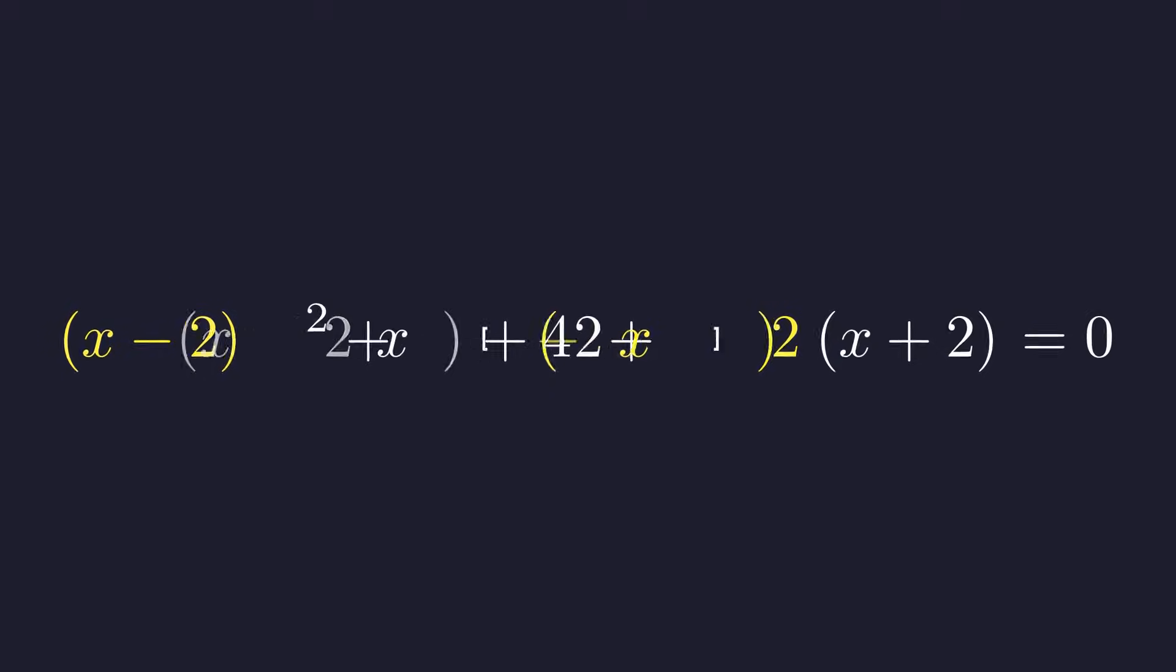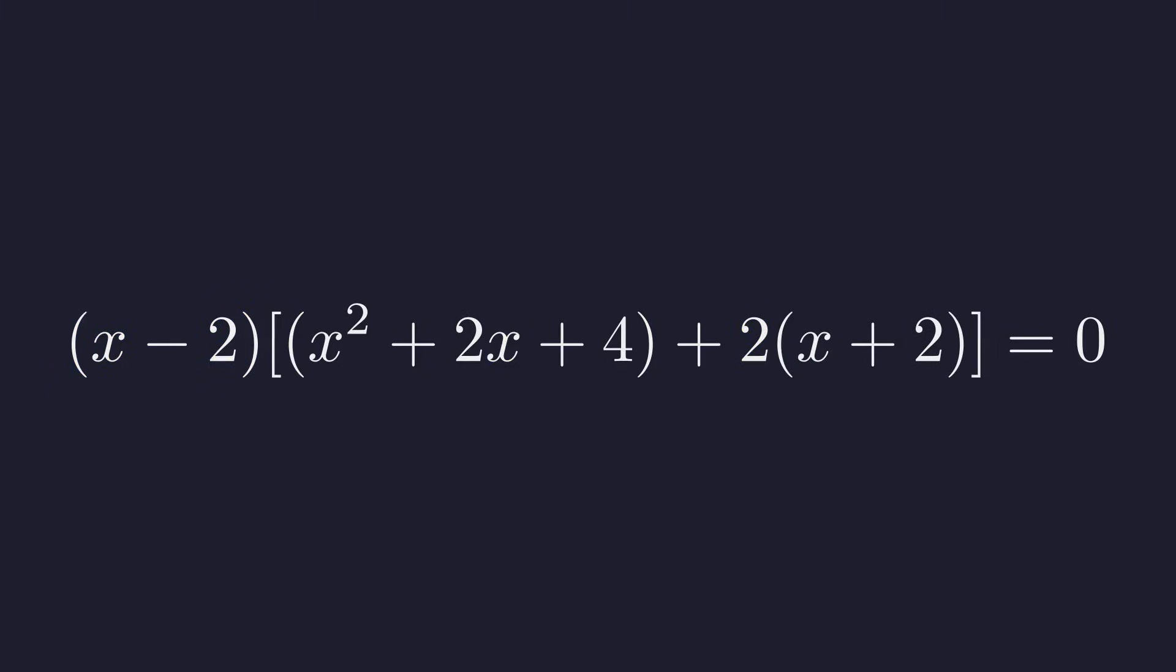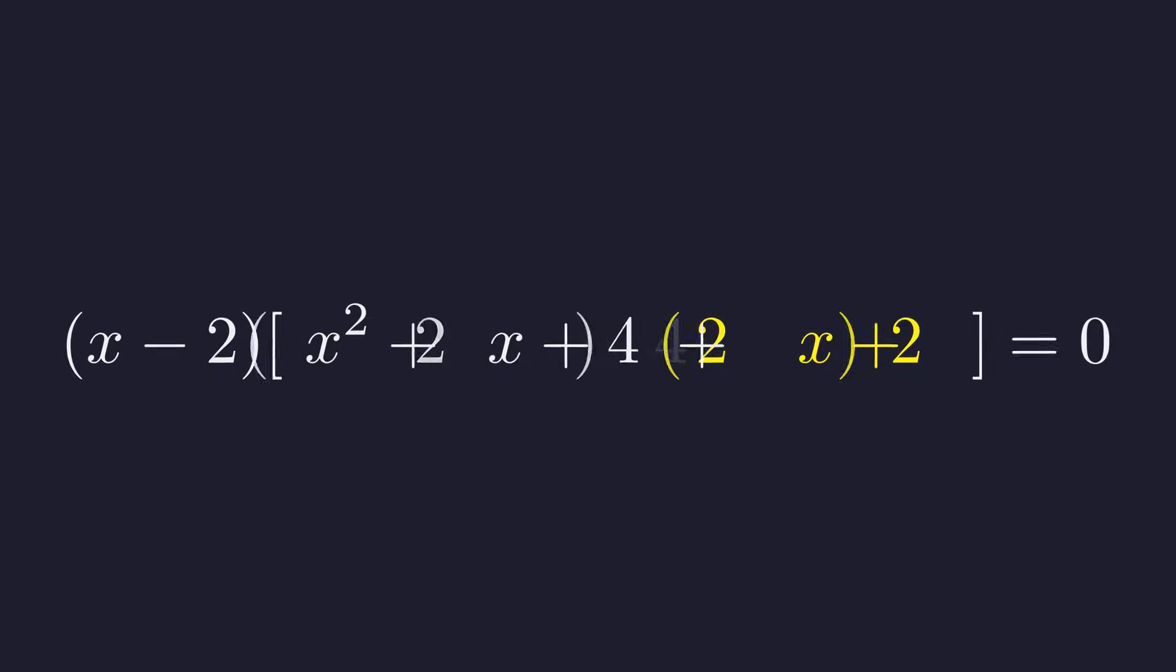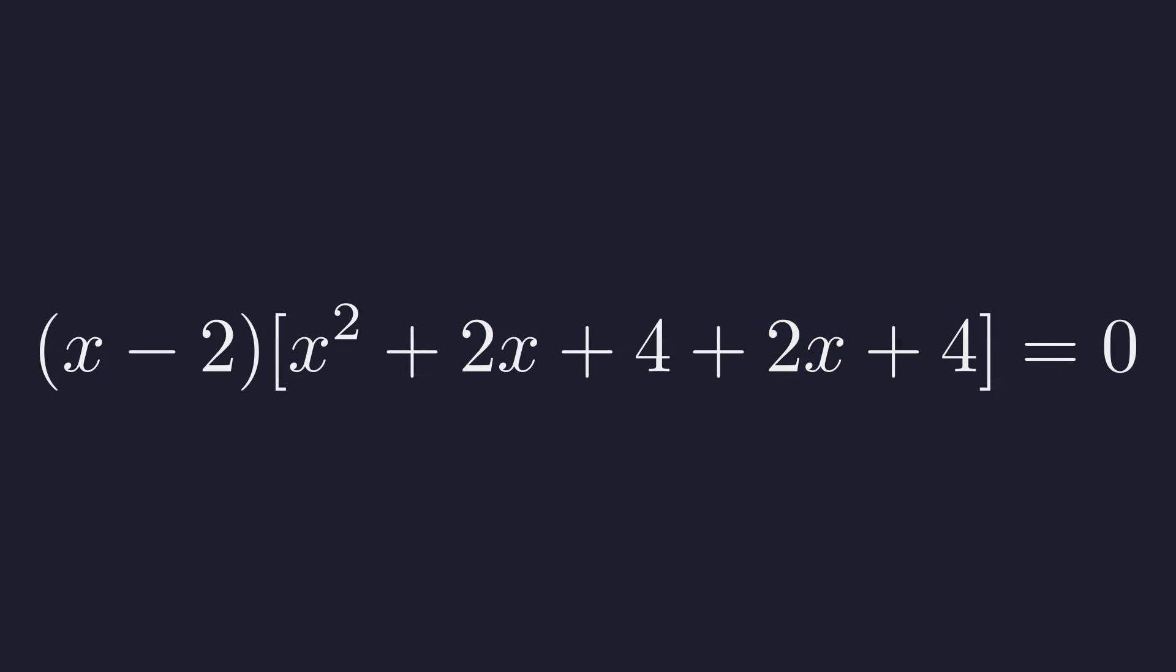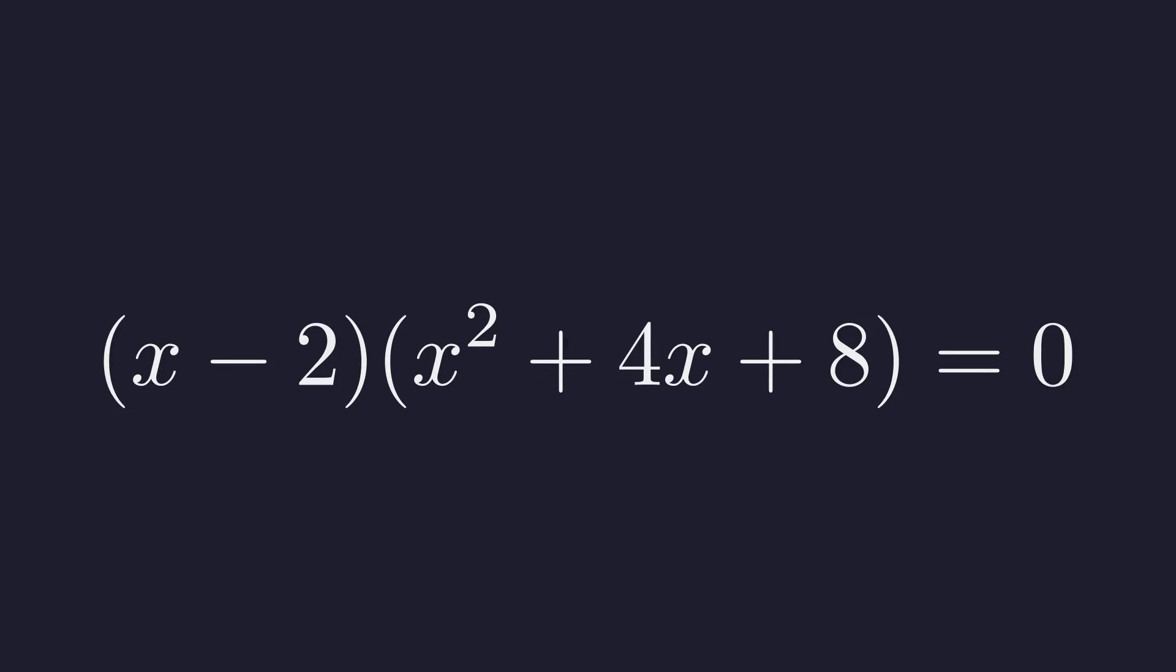Factoring out x minus 2 leaves us with the sum of what's left inside the brackets. Now we need to simplify what's inside the brackets. Let's distribute that 2. This gives us x squared plus 2x plus 4, plus another 2x plus 4. Let's combine those like terms. 2x plus 2x gives us 4x and 4 plus 4 is 8. And there we have it. The completely factored form.